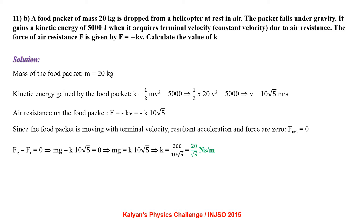A food packet of mass 20 kg is dropped from a helicopter at rest. It gains kinetic energy of 5000 J when it reaches terminal velocity. From half m v squared equals 5000, with m equals 20 kg, we get v equals 10 root 5 m per second. Air resistance f equals minus kV equals minus k times 10 root 5. At terminal velocity the net force is zero, so mg minus k times 10 root 5 equals 0. Solving gives k equal to 20 root 5 N second per meter.